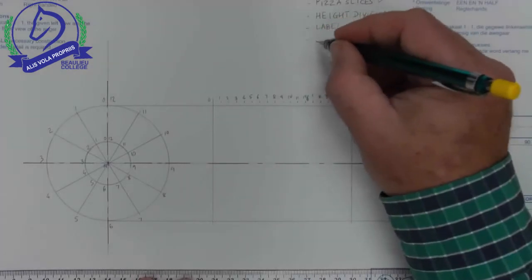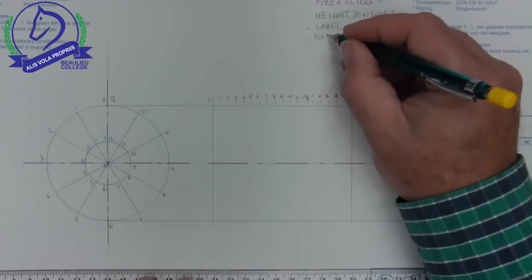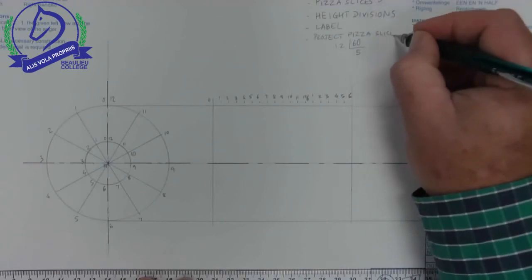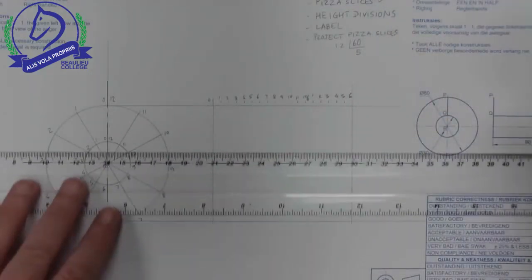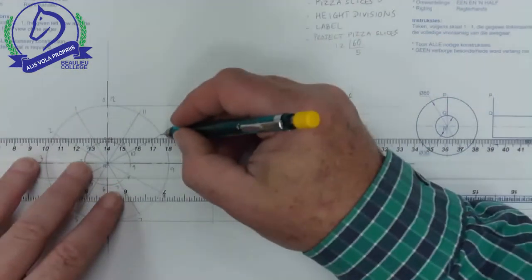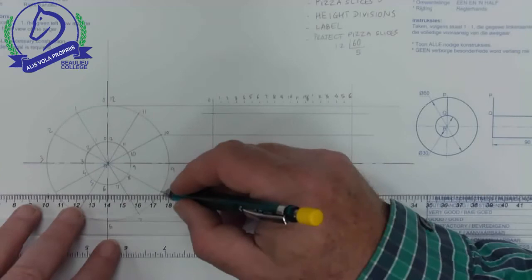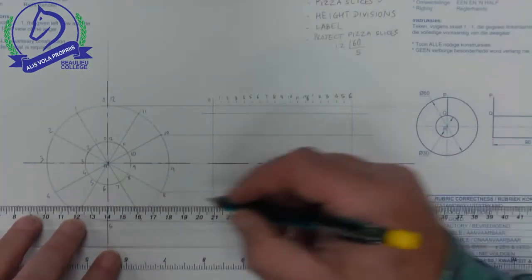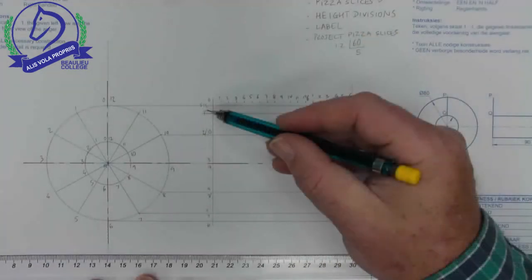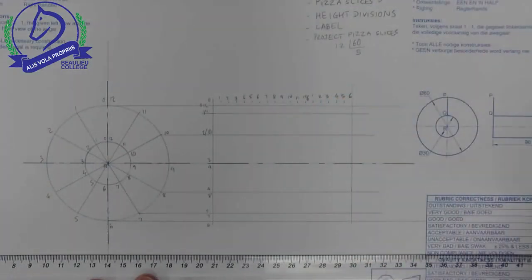PQ is the start point, meaning this would be our start point here. My next step is to project my pizza slices, and just label those. There I have those labeled.